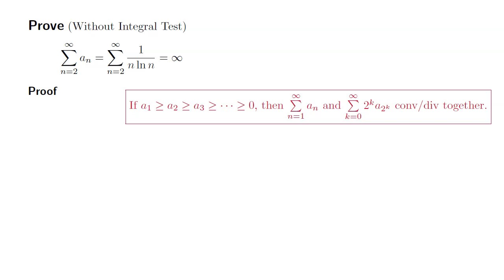All right, so I'll make sure that the a_n is non-negative and also decreasing. So what's the first one, a_2? So a_2 is 1 over 2 times natural log of 2. a_3 is 1 over 3 times natural log of 3, which is obviously less than or equal to 1 over 2 times natural log of 2 because the denominator is larger.